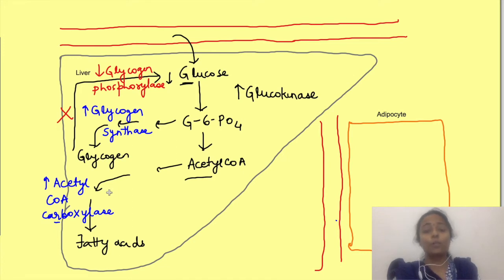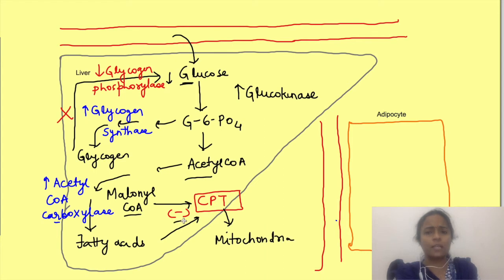Also in the process of synthesis of fatty acids, malonyl CoA is formed which inhibits carnitine palmitoyltransferase enzyme, i.e. CPT enzyme, present on the membrane of mitochondria which causes entry of fatty acids into the mitochondria. So when this enzyme is inhibited, beta oxidation of fatty acid doesn't occur. So what is happening? Only synthesis of fats is occurring from extra glucose.